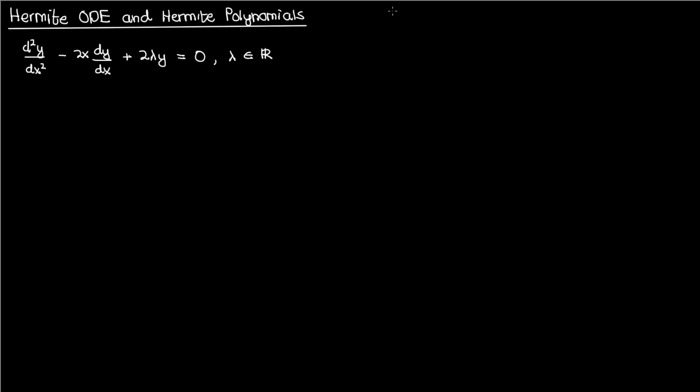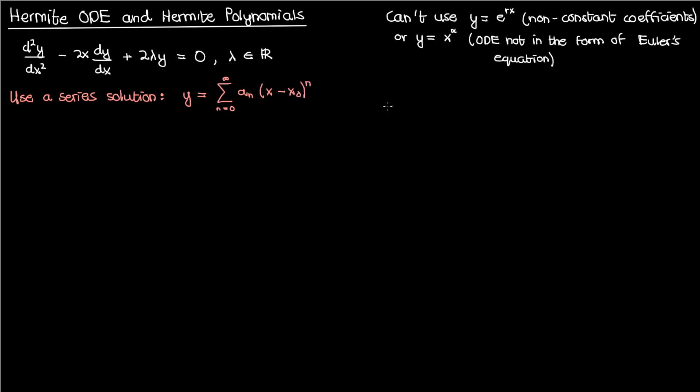Now how do we solve this differential equation? Well we can't use the exponential solution e^(rx) since we don't have constant coefficients. We also can't use the solution x^α since this doesn't take the form of an Euler equation, but we can use a simple series solution where we suppose that y is an infinite polynomial series with unknown coefficients a_n that we ultimately have to solve for.